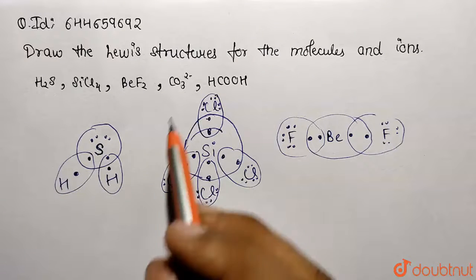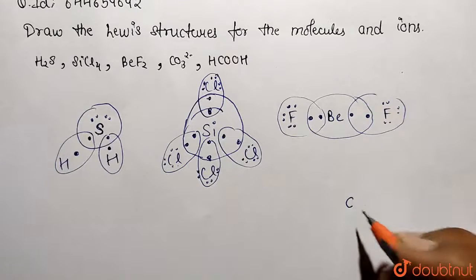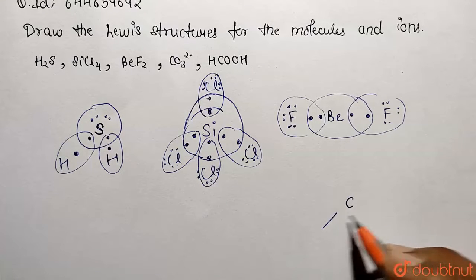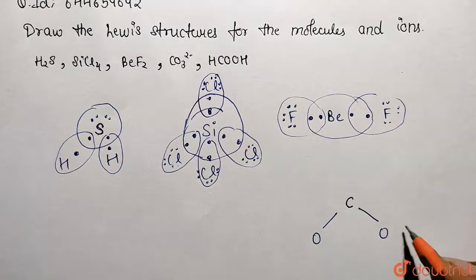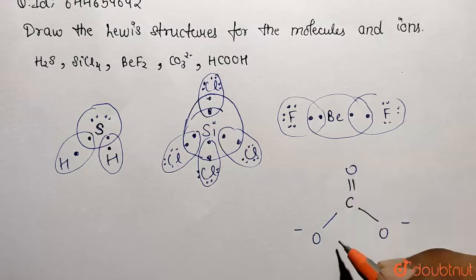Now for CO3^2-. Carbon is the central atom. It bonds with oxygen atoms—one oxygen here with a negative charge, another oxygen also with a negative charge, and this one is double bonded with oxygen. To show the Lewis structure, draw carbon with its electrons.